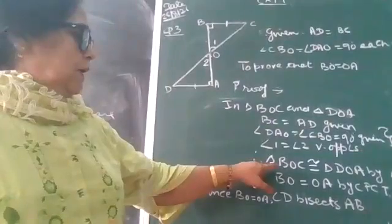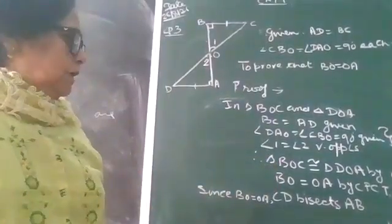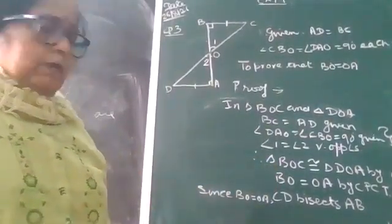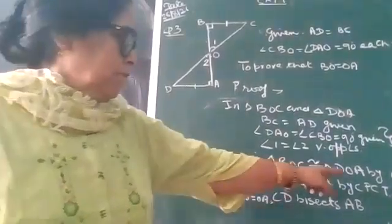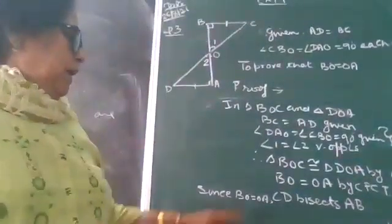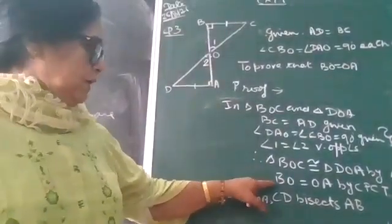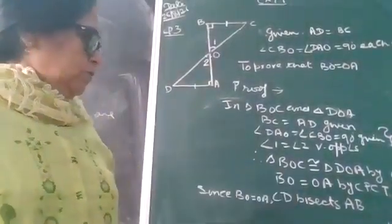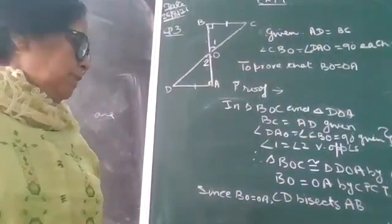And therefore, triangle BOC is congruent to triangle DOA by AAS. And by this, we can say BO is equal to OA by CPCT.